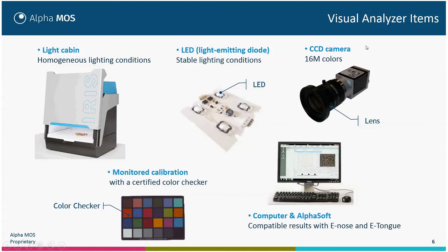The CCD camera allows 16 million colors with a specific lens. To get a repeatable analysis, we have to calibrate the camera, and we use a standard color checker with 24 different colors. The computer and AlphaSoft allow data treatment and color treatment. The results are compatible and can be mixed with results coming from the electronic nose and the electronic tongue.